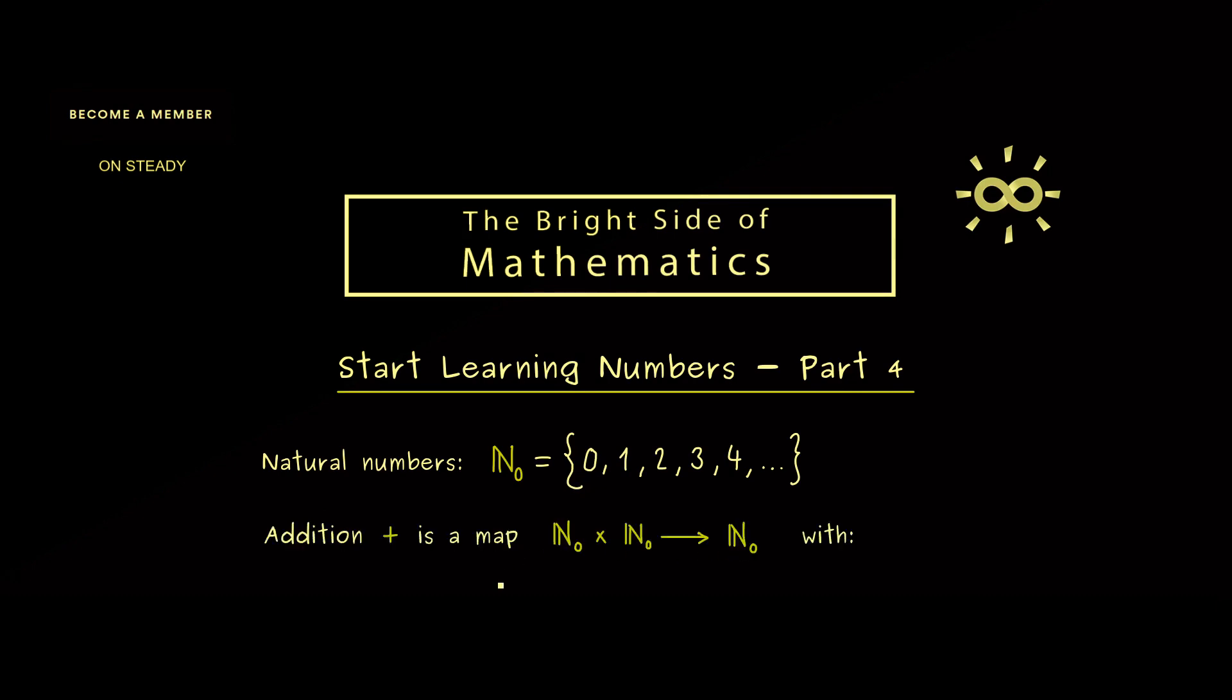Moreover, we have already learned the addition is a binary operation, which means a map from the Cartesian product into the natural numbers again. And we also know some properties of this operation, so let's summarize them into 3 parts. The first one is if you add 0, you don't change the element. Therefore we call 0 the neutral element with respect to the addition, or simply the identity element.